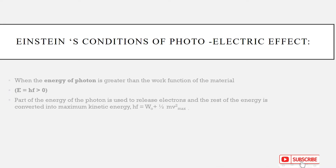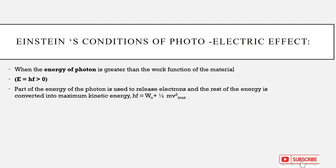There are conditions for the photoelectric effect. Condition one: when the energy of the photon, hf, is greater than the work function, part of the energy of the photon is used to release electrons and the rest of the energy is converted into maximum kinetic energy.